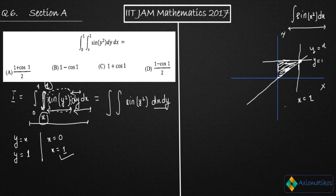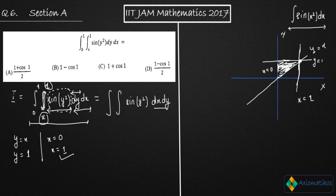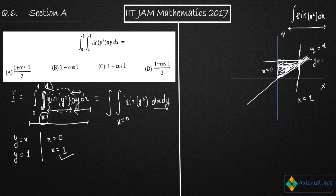Now we have to do dx dy, meaning we check the limit of x first. Drawing a horizontal strip, x varies from x equals 0 to x equals y — not x equals 1. And y varies from y equals 0 to y equals 1. So we can now change the order: x from 0 to y, and y from 0 to 1.